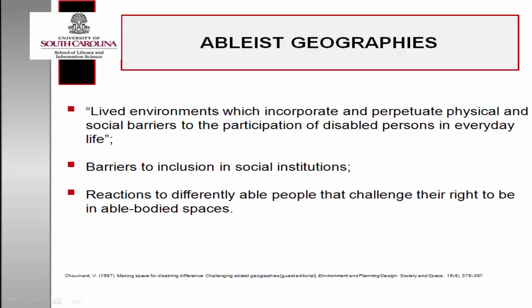Schwenard also introduced the concept of ableist geographies — lived environments which incorporate and perpetuate physical and social barriers to the participation of disabled persons in everyday life. For differently-abled people, ableist geographies physically create barriers to inclusion in social institutions, in addition to social exclusion that can result from reactions to differently-abled people that challenge their right to be, and in particular, to be in able-bodied spaces.